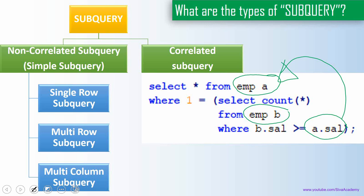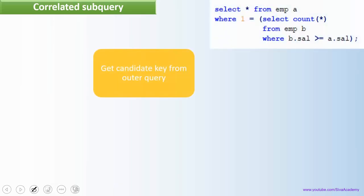Let us now understand how this correlated subquery is executed, and what your answer should be from an interview point of view. Once you understand how it executes, you will be able to answer much more clearly in the interview. The execution actually starts with the outer query — this is one main difference from a non-correlated subquery, where the inner query gets executed first. In a correlated subquery, it starts from the outer query.